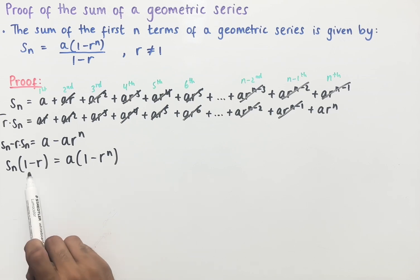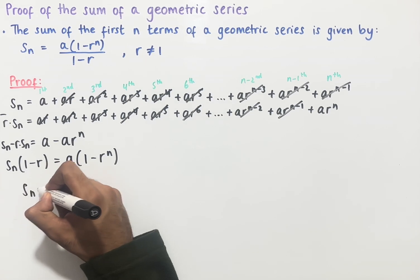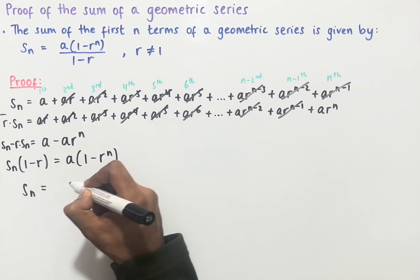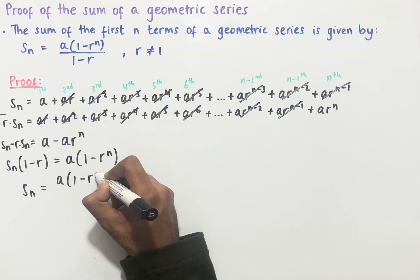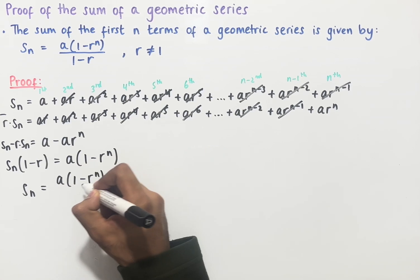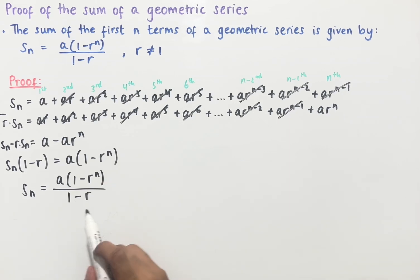Finally, if we divide both sides by this bracket, we end up with Sn, which equals a brackets 1 minus r to the power of n, all over 1 minus r.